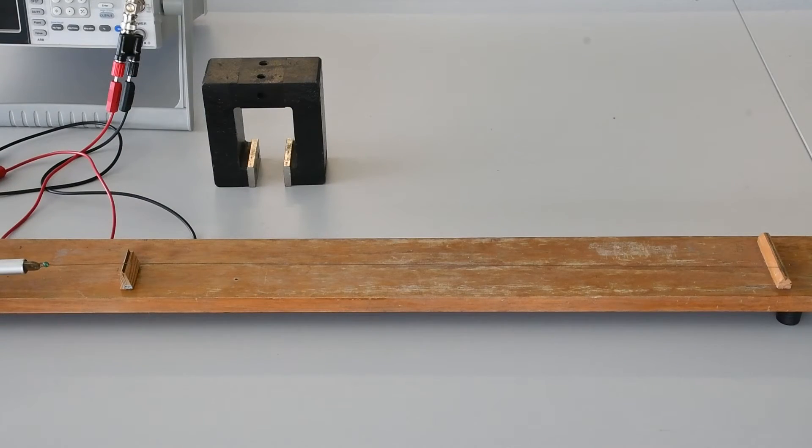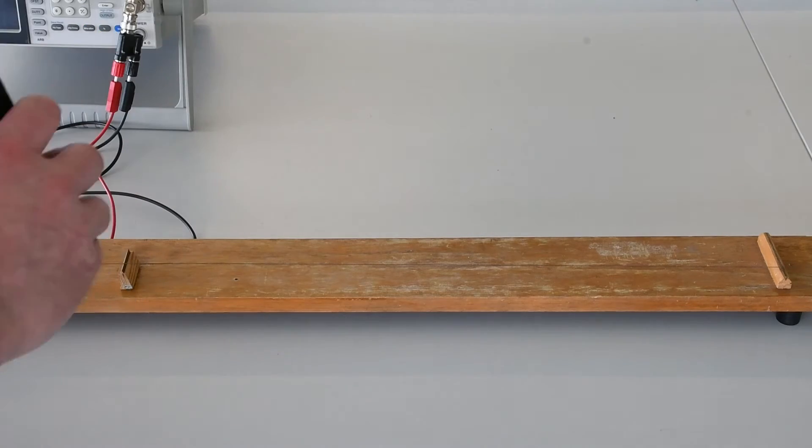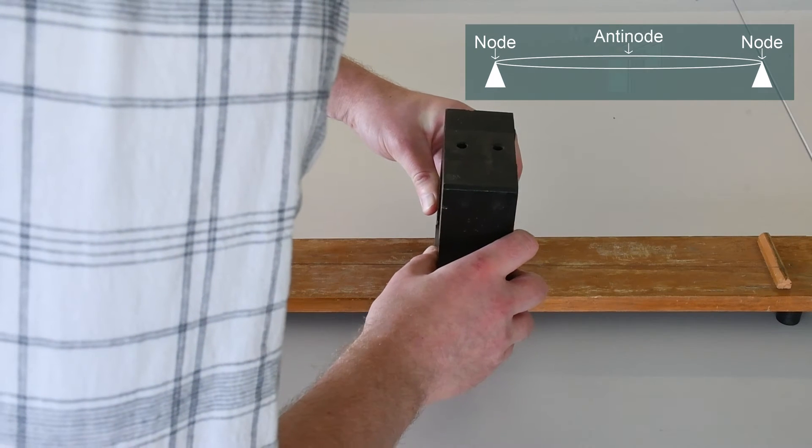We can now include our bar magnet. This should be positioned in the middle of the two bridges at the anti-node of the standing wave.